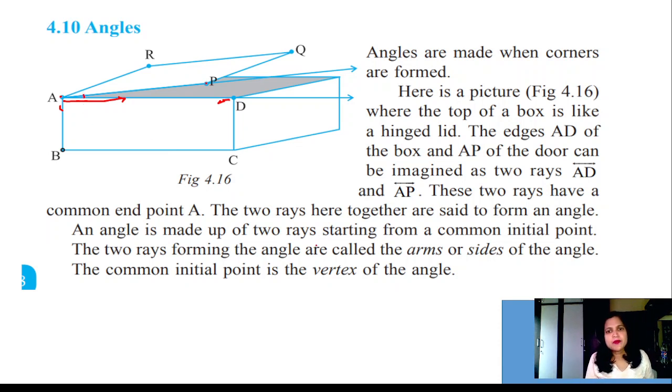An angle is made up of two rays starting from a common initial point. The two rays forming the angle are called the arms or sides of the angle. The common initial point is the vertex of the angle.